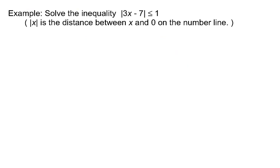Let's look at a few more that are a little bit more involved. If the quantity inside the absolute value is something more complex, it doesn't really change the approach. An absolute value represents the distance between whatever is inside the absolute value bars and 0. In the previous video, I introduced you to my cat, Samson.